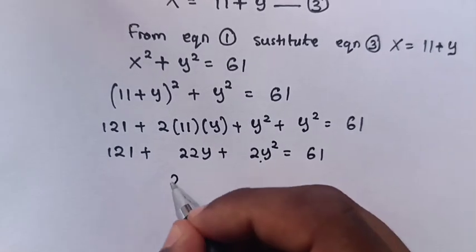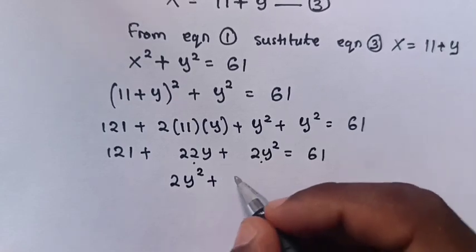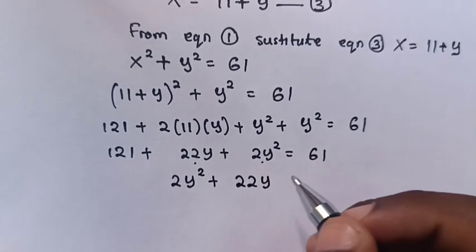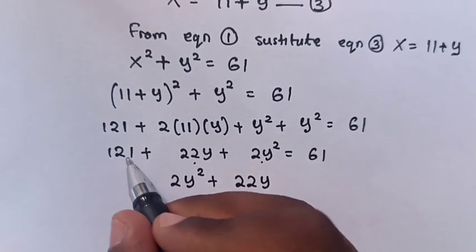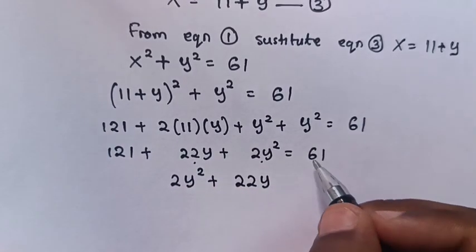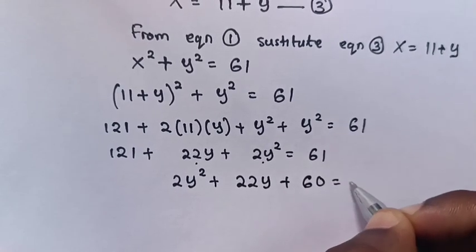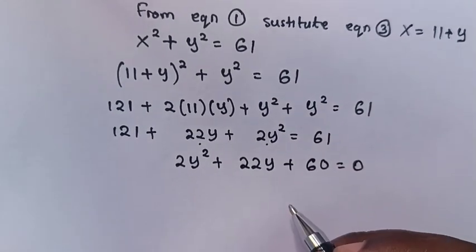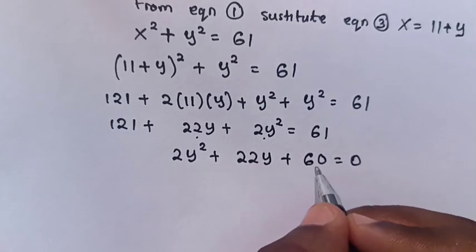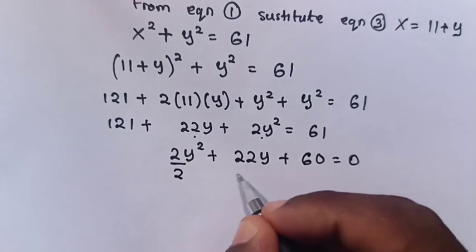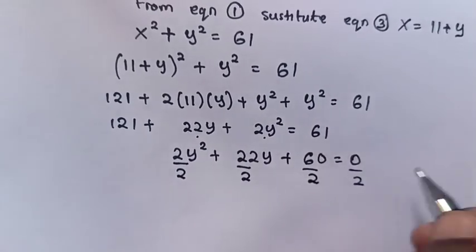Then, 121 minus 61 is 60, so we have 2y squared plus 22y plus 60 is equal to 0. This quadratic equation can be divided by 2 on both sides, so we divide every term by 2.